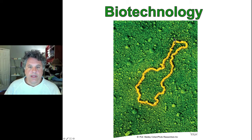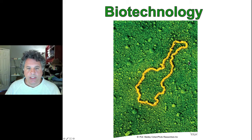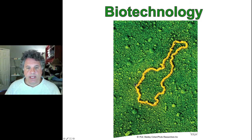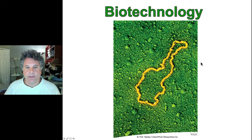Shown here is an electron micrograph of a small plasmid DNA molecule — a small circular DNA molecule that replicates independently in bacteria. These plasmid molecules have made possible much of biotechnology, so we'll be talking a lot about plasmids as we progress.